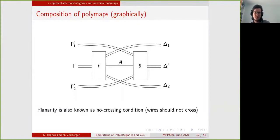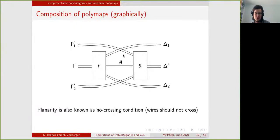The idea is that we will represent polymaps using string diagrams that go from left to right. A polymap is represented by a box that takes some inputs (gamma) and outputs some elements (delta 1, delta 2, and A). We then represent composition by plugging the wire from one output of F into one input of G. We can see that composition happens only along one wire, one object.